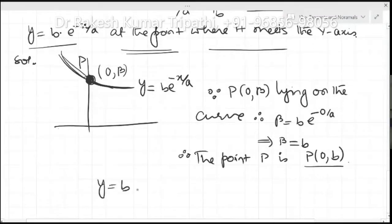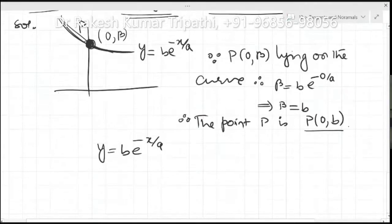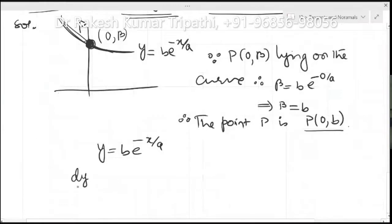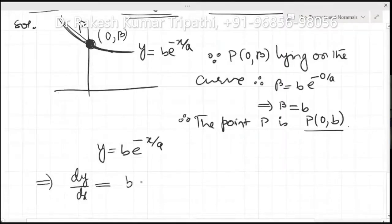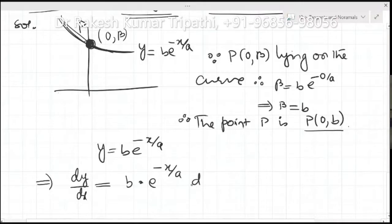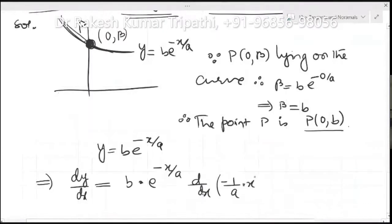To find the tangent, first we need to find the slope of the curve. Differentiating both sides with respect to x: dy/dx = b — being a constant outside — times the derivative of e^(−x/a), which is e^(−x/a) times the derivative of (−x/a), which we can write as −1/a.